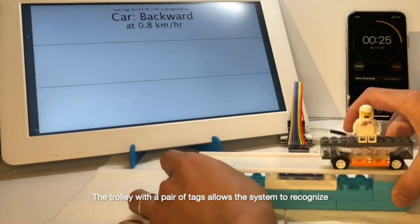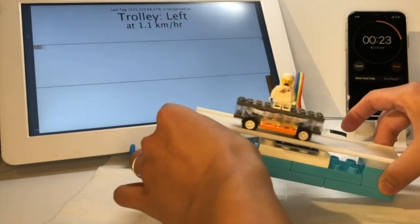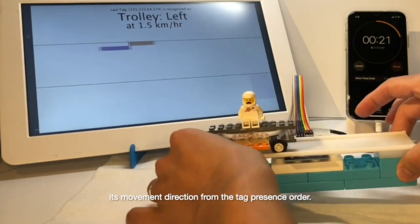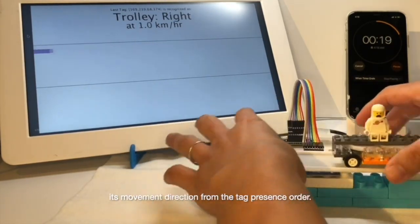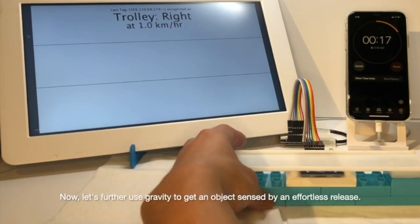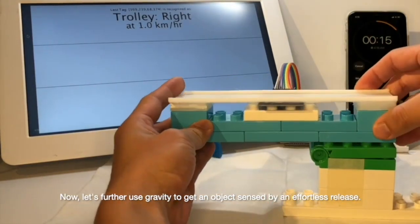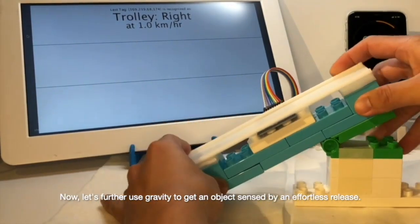The trolley with the pair of tags allows the system to recognize its movement direction from the tag presence order. Now, let's further use gravity to get an object sensed by an effortless release.